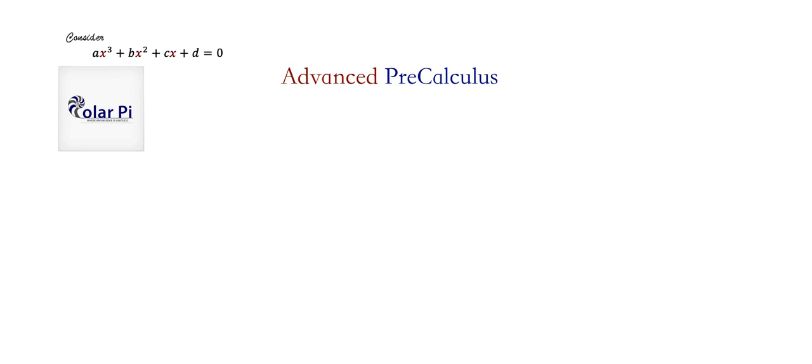Let's consider a standard cubic written in this form. We can do what's called depressing the cubic — we can do this to every cubic using a substitution. I believe this is called Cardano's method.